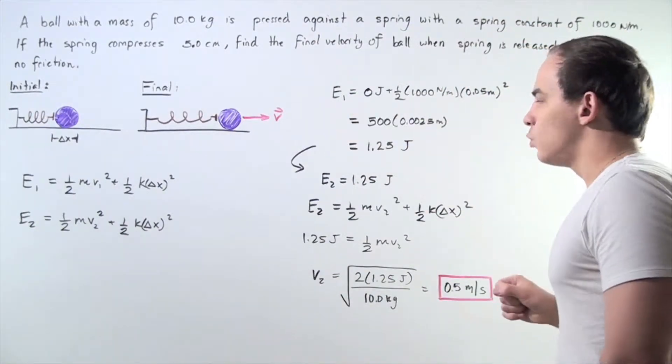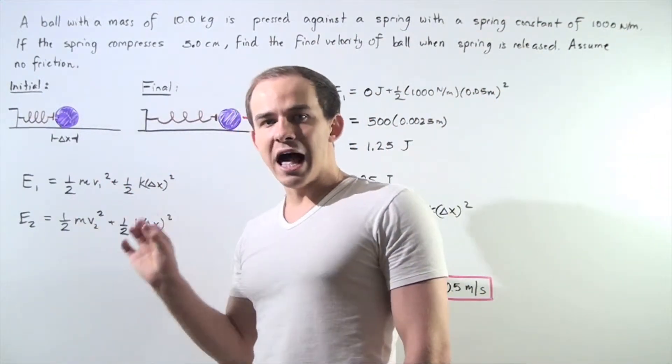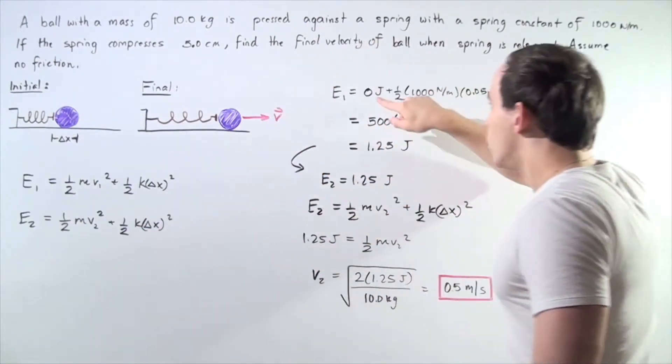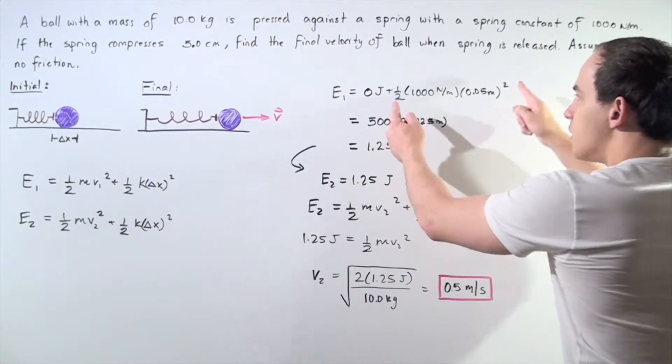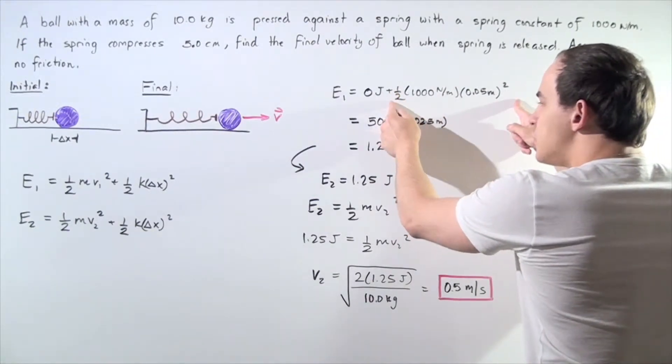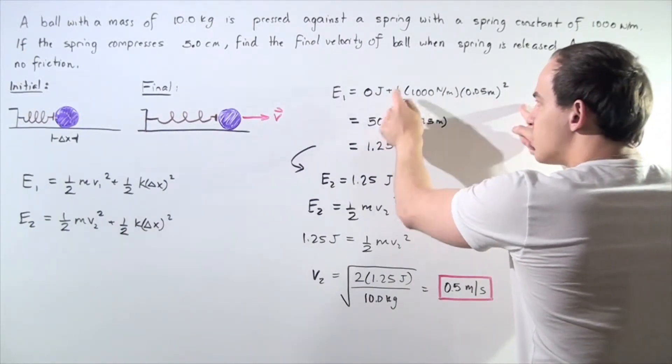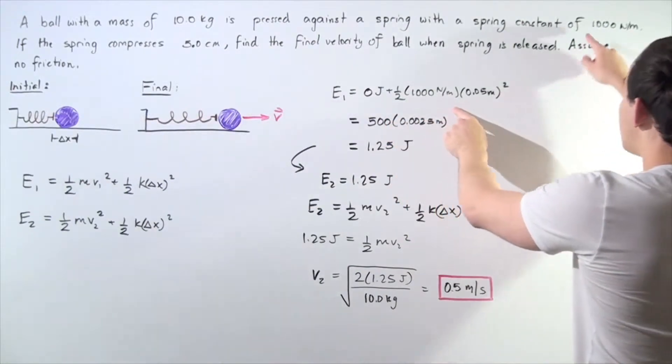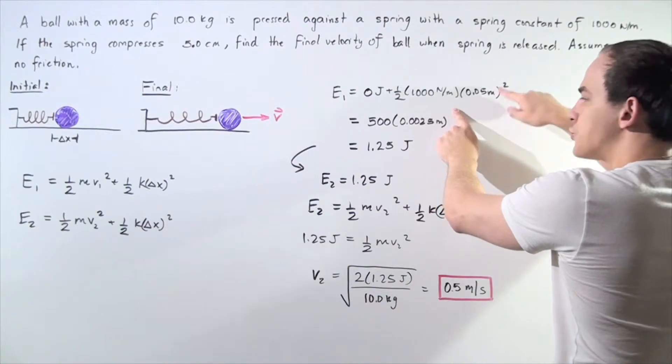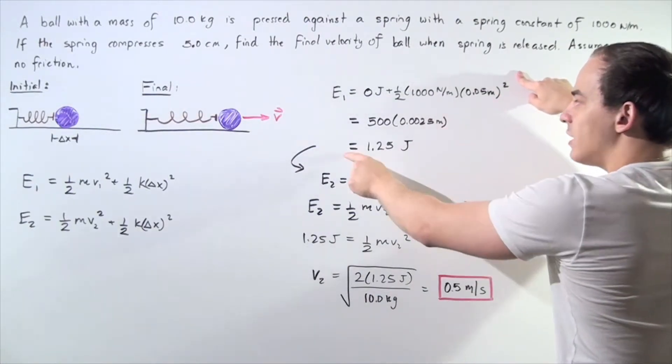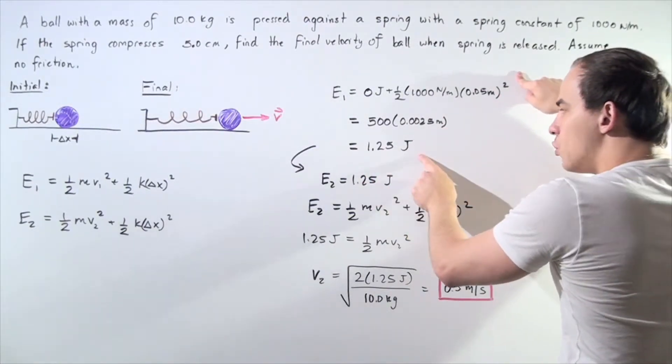E1 is equal to, well, because our initial velocity V1 is zero, we have zero joules of kinetic energy, plus the elastic potential energy, the energy stored in the spring. So one-half our k, a thousand newtons per meter, multiplied by 0.05 meters squared. And we get a value of 1.25 joules.